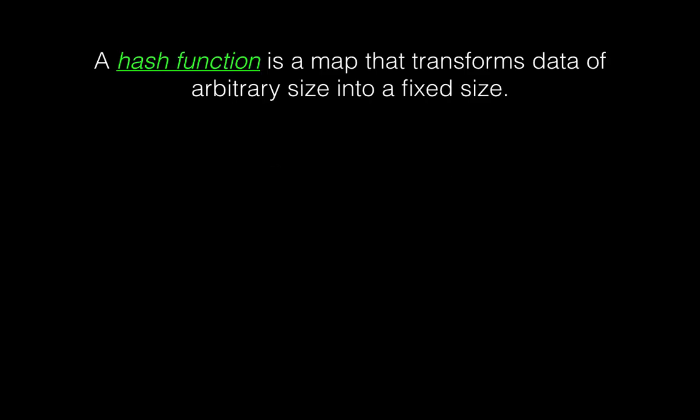So let's talk about what a hash function is. A hash function is a map — think about it this way: you give it an input and you get an output. It transforms data of arbitrary size into a fixed size. There's something important here: a hash function doesn't have any other input. You just give it some data and it gives you something of a fixed size.